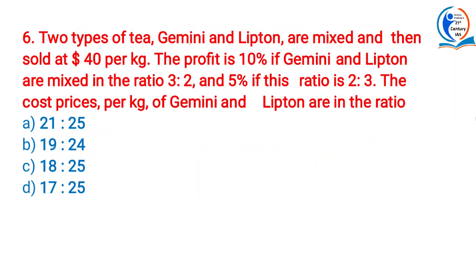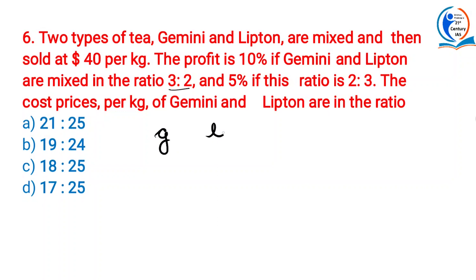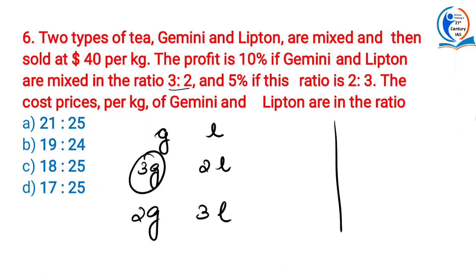Two types of tea, Gemini and Lipton, are mixed and then sold at rupees 40 per kg. The profit is 10% when Gemini and Lipton are mixed in the ratio 3 to 2, and 5% if they are mixed in the ratio 2 to 3. Find the cost price per kg of Gemini and Lipton in ratio. Let small g and small l represent the cost price of Gemini tea and Lipton tea respectively.